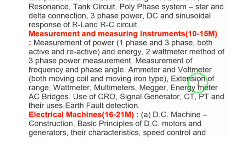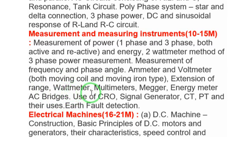Questions will also be asked on moving coil and moving iron instruments — their applications and simple problems. For range extension, you need to calculate the resistance value to add. AC bridges, use of CRO, signal generator, CT, PT and their uses, and earth fault calculations are also included in this section.